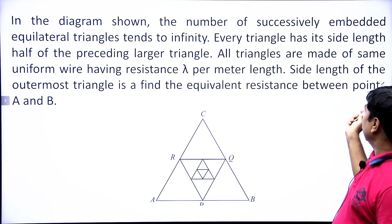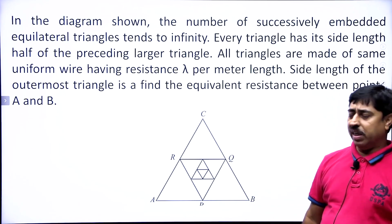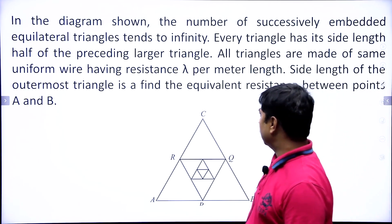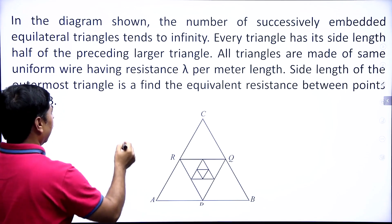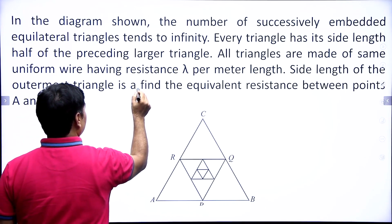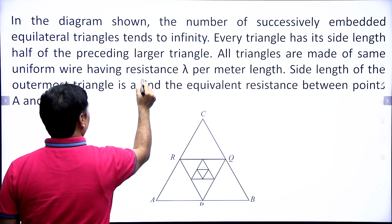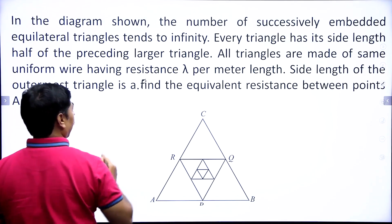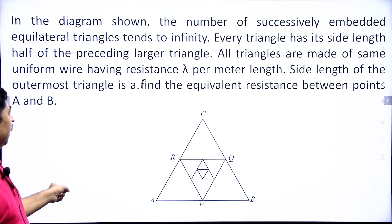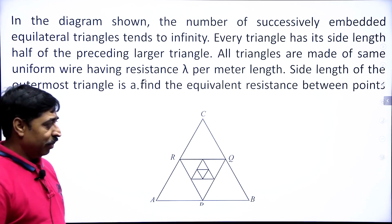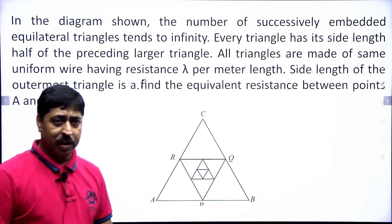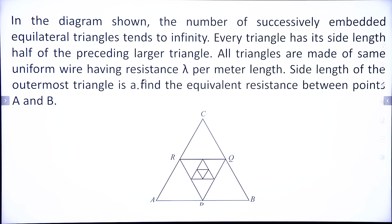Find the equivalent resistance between the points A and B. Side length of the outermost triangle is A. Find the equivalent resistance between points A and B. This is your question. I am stepping out of the screen so that you can capture the question if you want and give it a try.